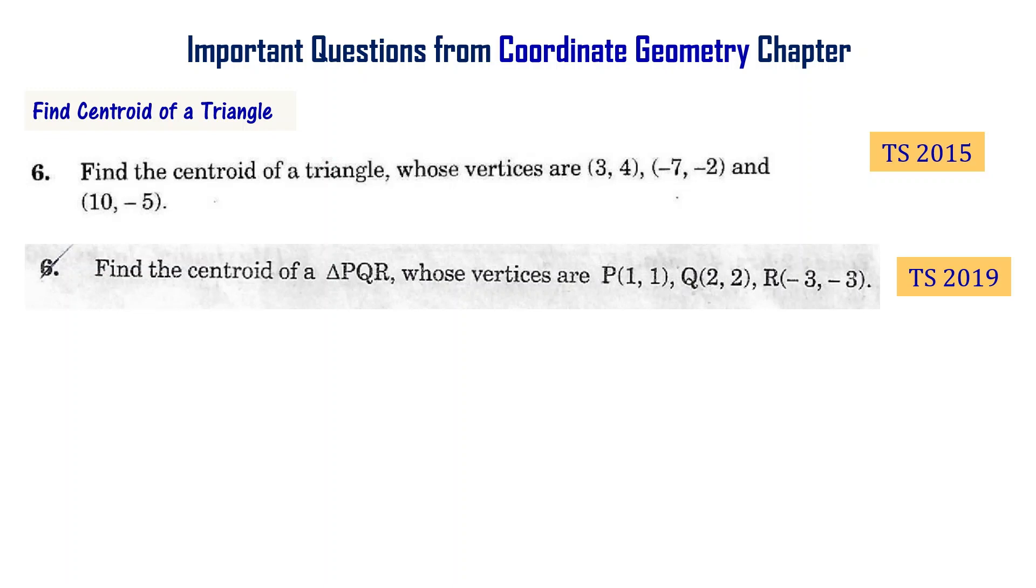Finding the centroid of a triangle is one of the important topics from the Coordinate Geometry chapter. Find the centroid of a triangle whose vertices are (3,4), (-7,-2), and (10,-5).